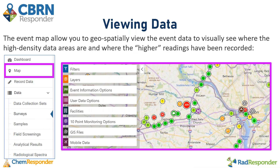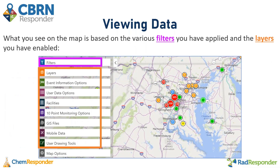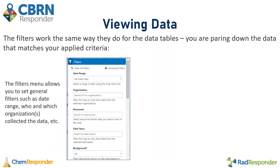The event map is going to allow you to geospatially view the data to see visually where the high density data areas are and where the higher readings have been recorded. What you see on the map is based on the various filters you have applied and the layers you have enabled. The filters work the same way they do for the data tables — paring down the data that matches your applied criteria. This general filters menu will allow you to set filters such as a date range, who and which organizations collected the data, which field teams collected the data, and more.